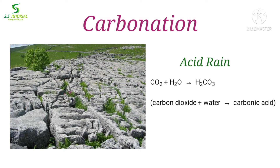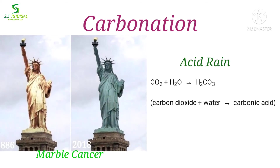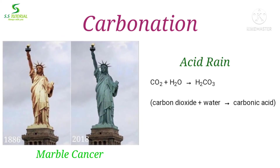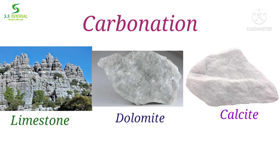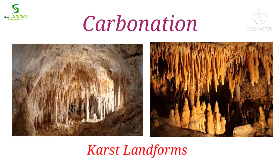This phenomenon is widely known as acid rain, which dissolves or breaks down minerals in rocks. Acid rain reacts with marble to form a powder-like substance which is then washed away by the rain. This phenomenon is called marble cancer. Carbonic acid dissolves rocks like limestone, calcite, dolomite, etc. Solution also takes place by carbonation, and karst landforms develop due to carbonation and solution.